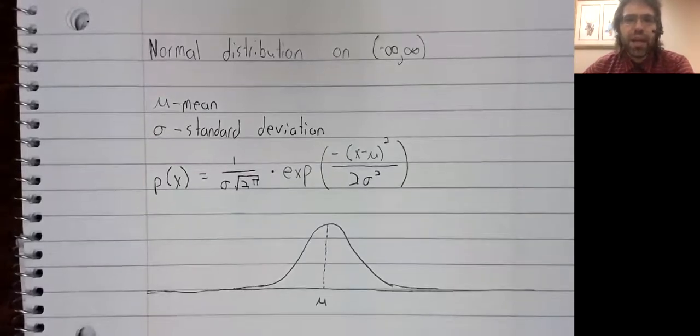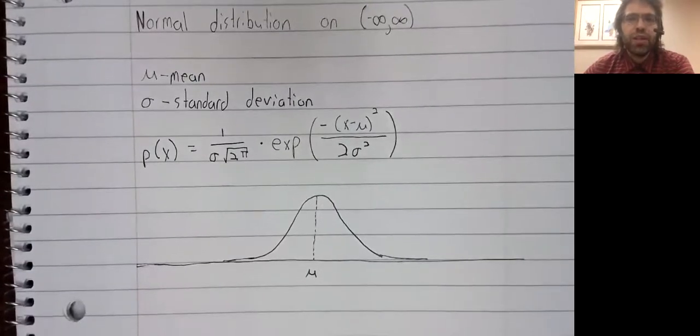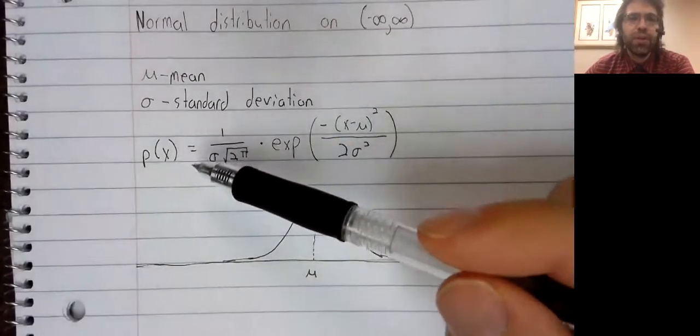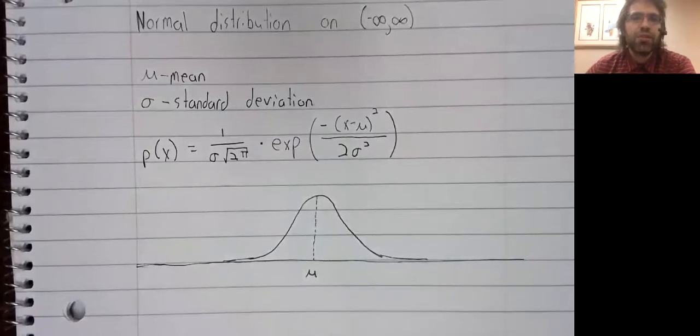What we have instead is three frequently memorized percentages. So you select a number at random using this probability distribution. Where is the number going to be?